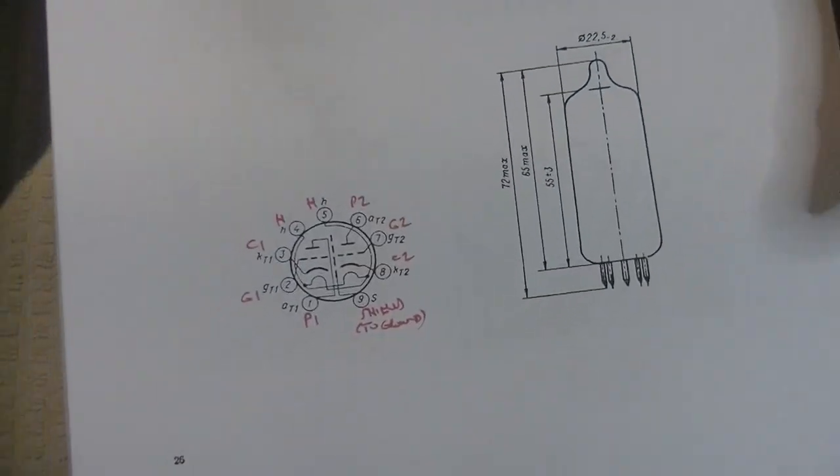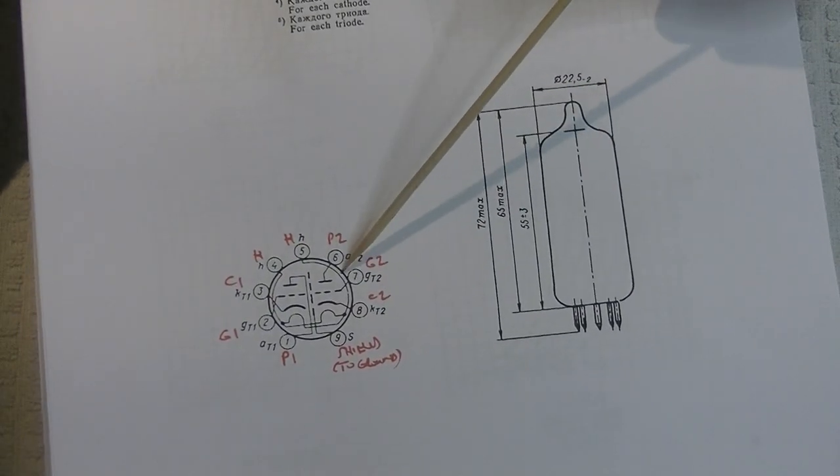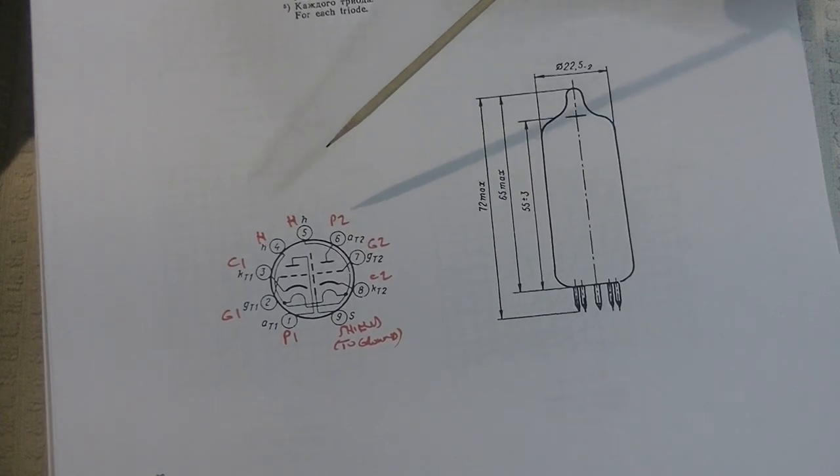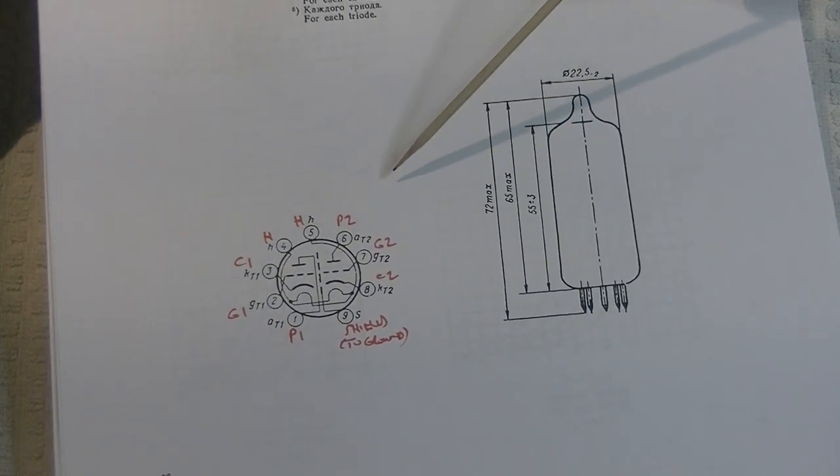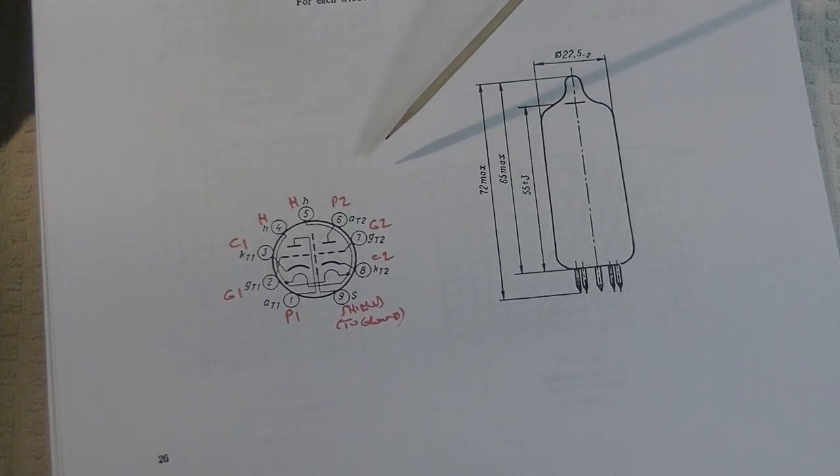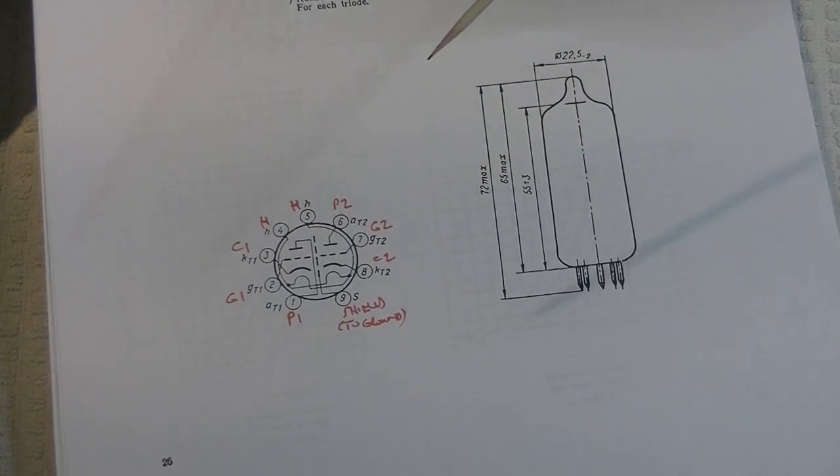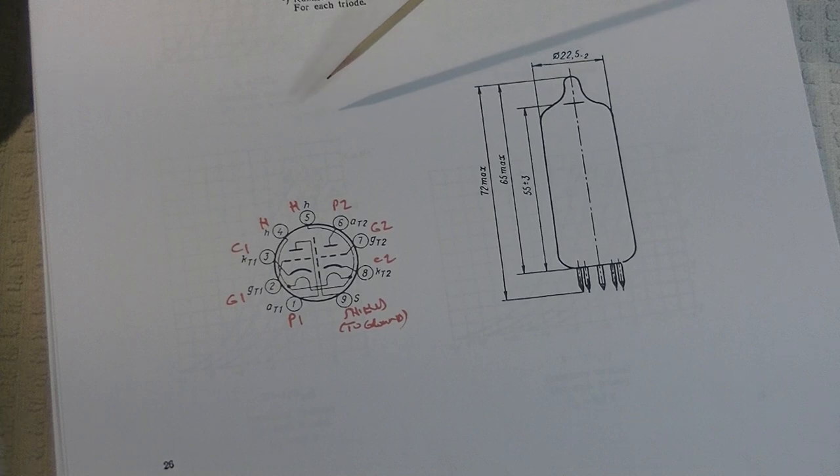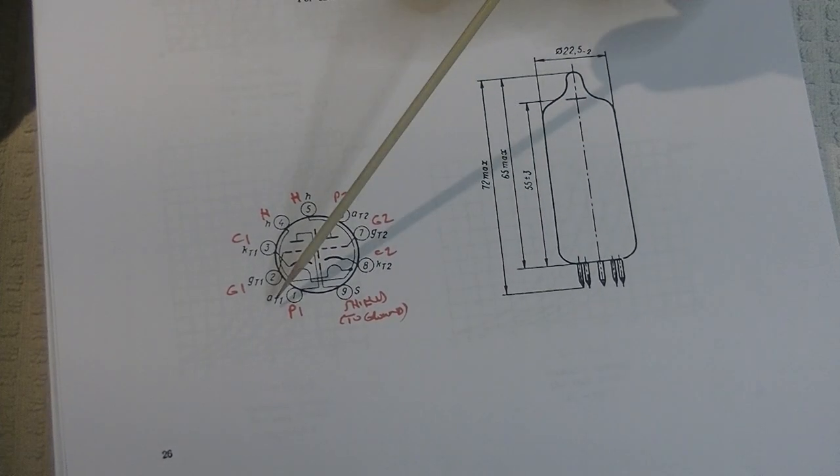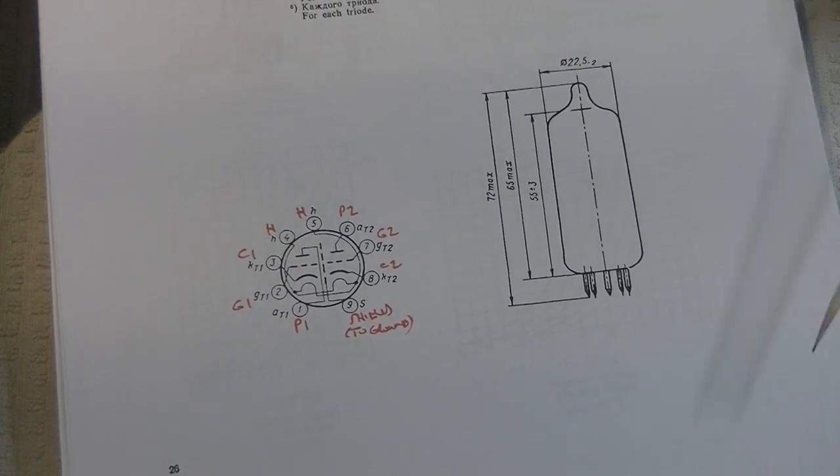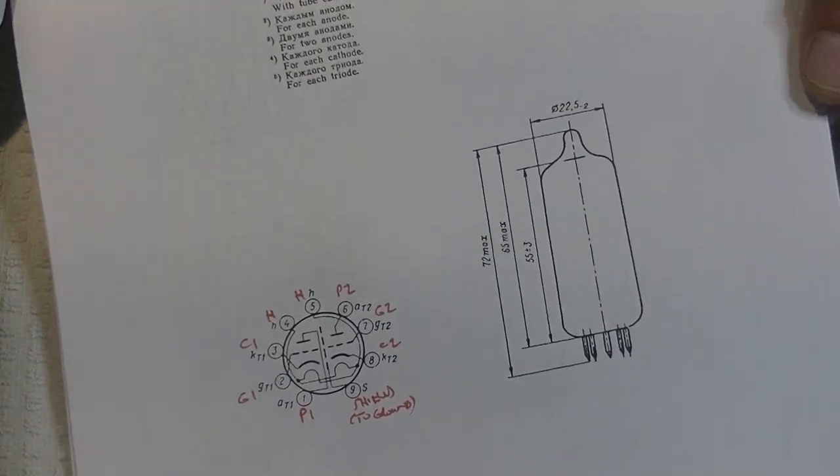The pinout is basically the 6DJ8 pinout. There's a whole series of tubes in that family that are 6 volt heated tubes, so they don't need a center tap on pin 9. In fact, pin 9 in this case is the shield, just like in the 6DJ8 series, and the pinout is identical.